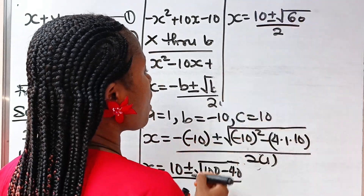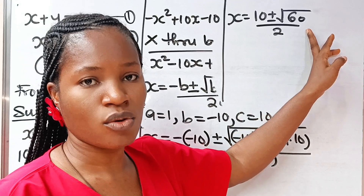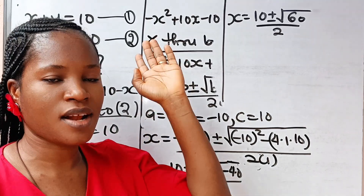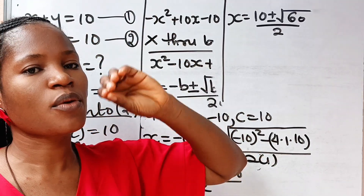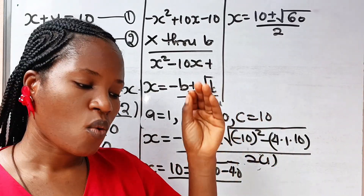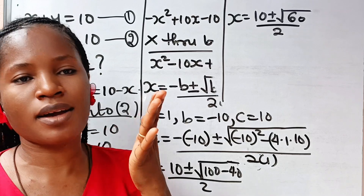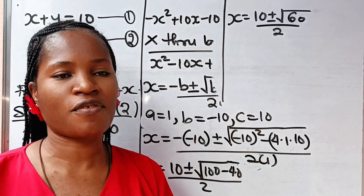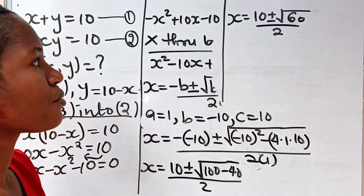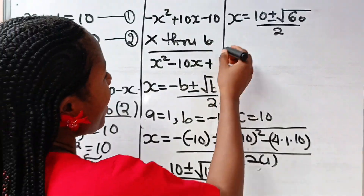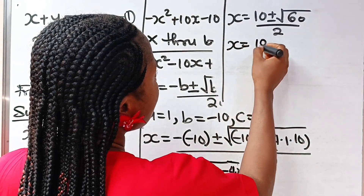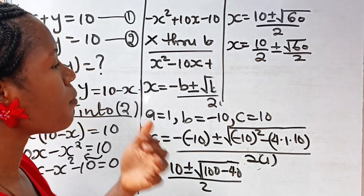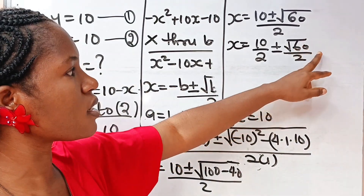Now let's simplify root 60. If this is the first time you are coming across this channel, please hit the notification button and turn on your notification bell. Give us a thumbs up if you are enjoying this video, and if you are a returning viewer, thank you very much. Now let's continue: x is equal to 10 divided by 2, plus or minus root 60 divided by 2. But before that, let us simplify root 60.